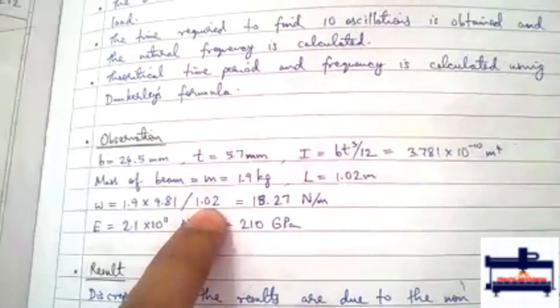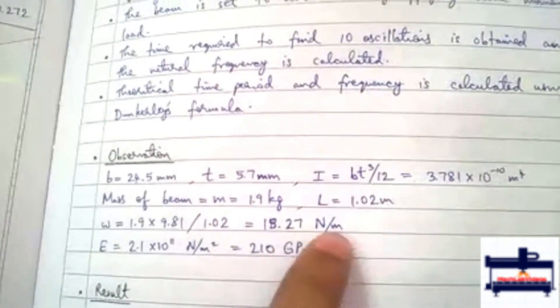Here W is nothing but load of the beam per meter because we want a UDL, load intensity.